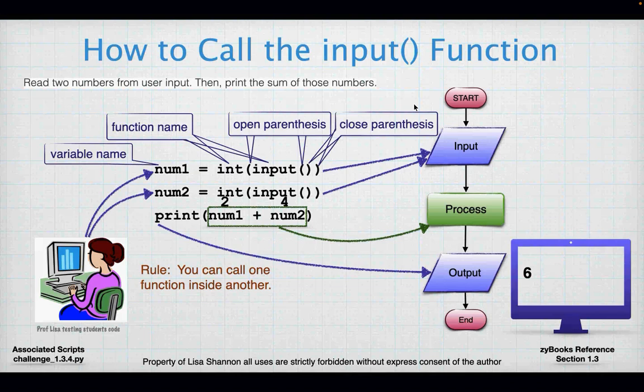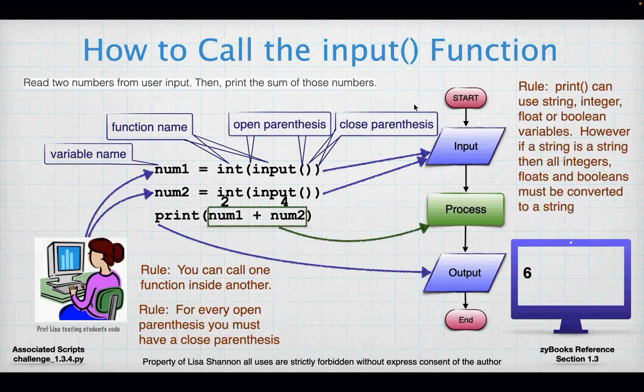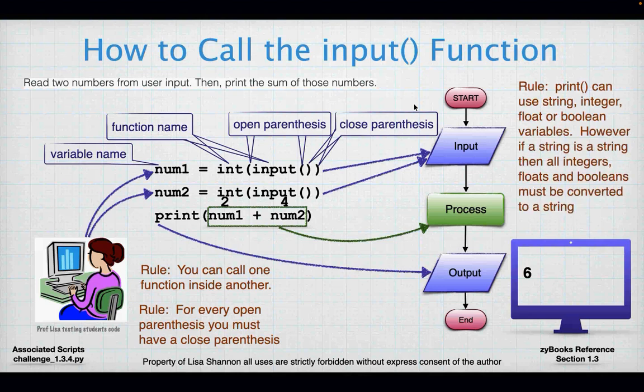On this slide, the new thing we're seeing is that you can have one function call inside another — that's what int and input are. Input is inside int because the result that comes out of input is going to be immediately passed into the int function. For every open parenthesis you have a corresponding closed parenthesis. Print can take a string, integer, or Boolean; however, if a string is used in print, integers and floats have to be converted to a string.